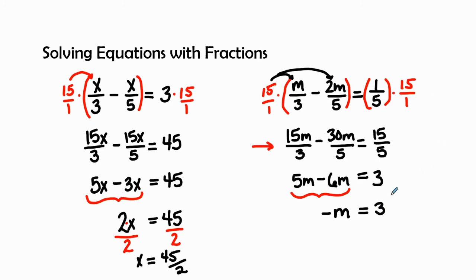I'm not quite finished because this negative is really a negative 1. I usually say it's an invisible 1. So negative 1, I'm going to divide by negative 1 on both sides. That's going to give me m equals a negative 3.